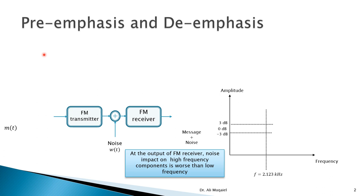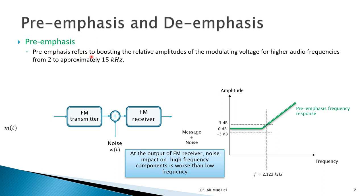Pre-emphasis refers to boosting the relative amplitudes of the modulated voltage for higher audio signals. Voice or audio signals at approximately two kilohertz and higher will be amplified. Looking at the transfer function of the pre-emphasis filter, frequencies below two kilohertz get constant amplitude and remain the same, while frequencies above two kilohertz get emphasized — they get boosted and have a stronger signal — because noise will affect this part worse.